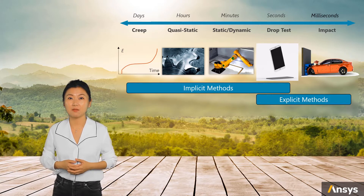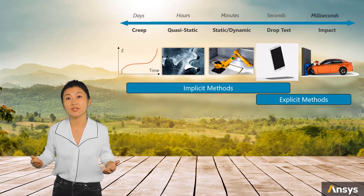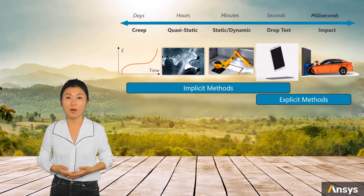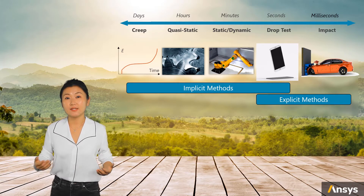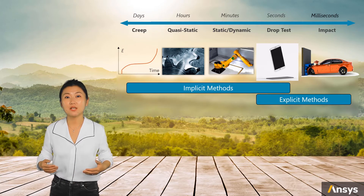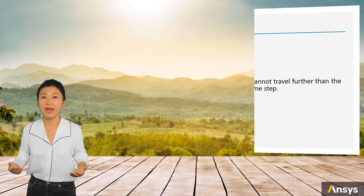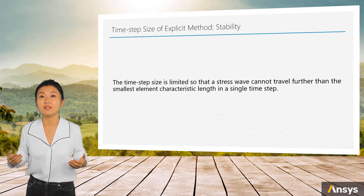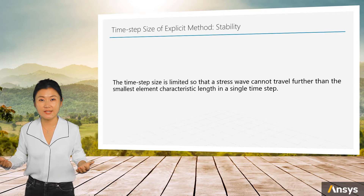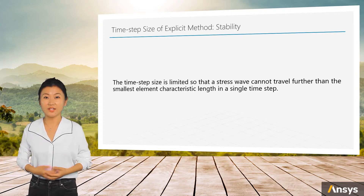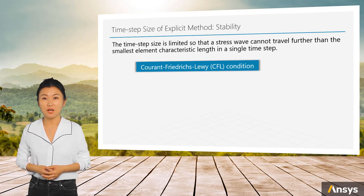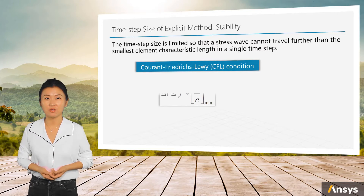We mentioned that explicit method may suffer stability issues if the time step size is not small enough. So how should we configure the right time step size? To enforce stable results, the time step size is limited so that in a single time step, a stress wave cannot travel further than the smallest element characteristic length. This is called the Courant–Friedrichs–Lewy (CFL) condition. The definition might sound complicated, but it can be expressed concisely in math.